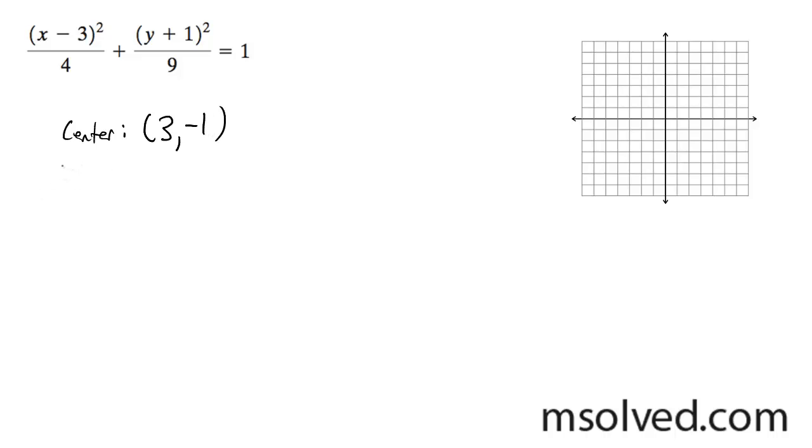And then for my foci, or actually my vertices, this is the part you've got to be a little bit careful about. It's going to be with my major axis, which is going to be 3. So it's going to be shifted up and down 3. So what you do is it's going to be with respect to my center, so it's going to be 3. And then you subtract for the bottom one, you subtract 3 from this, so it's negative 4. And then for the top one, it's 3, and then you add 3, so it becomes 2.